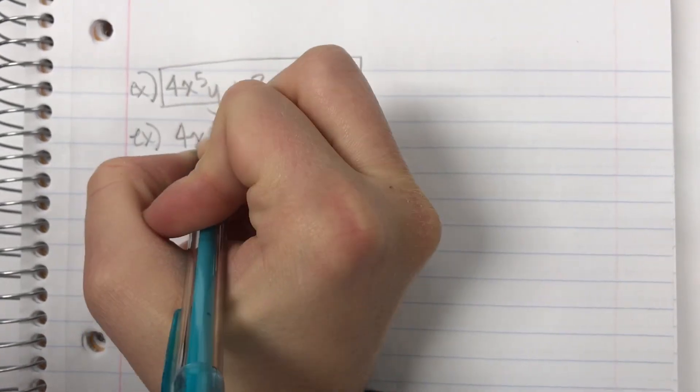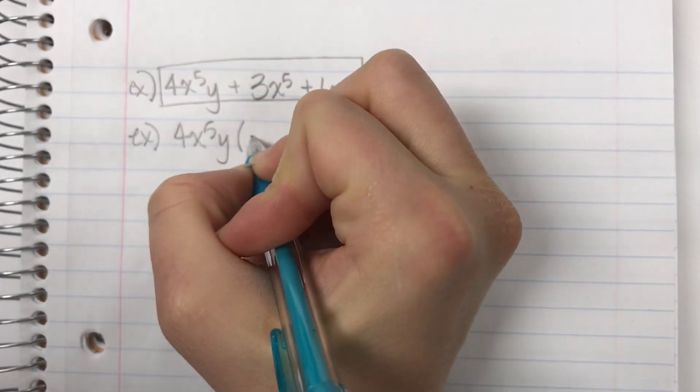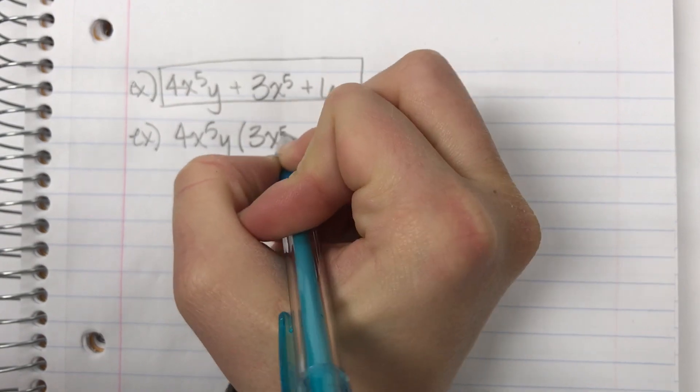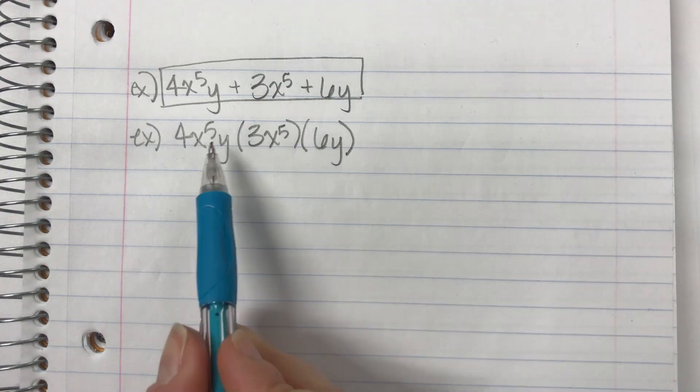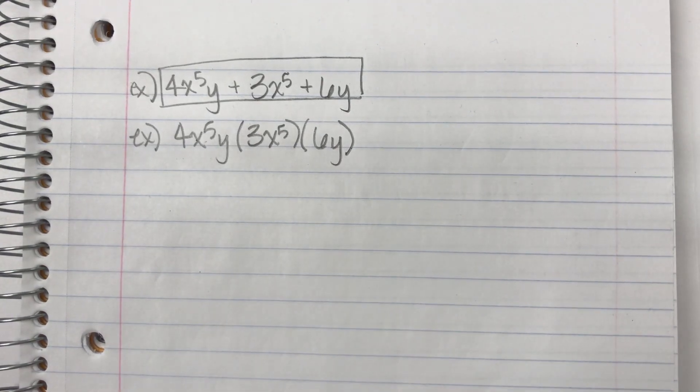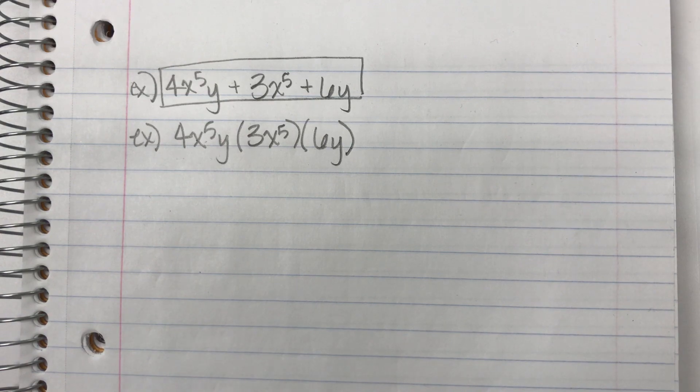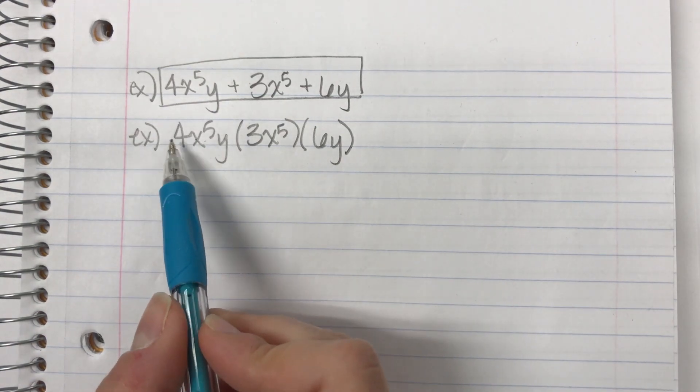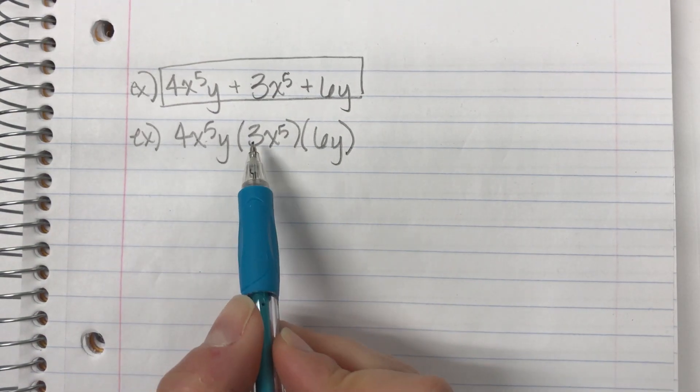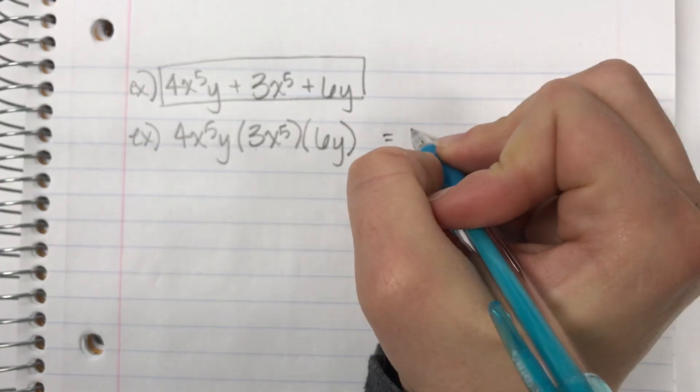All right, next one. 4x to the 5th y times 3x to the 5th times 6y. Here's an example of the problems we've been doing lately. Multiplication does not have to be the same labels and everything. They don't have to be like terms. I'm allowed to multiply. So I'm just going to multiply all the way across. I'm going to multiply coefficients. 4 times 3 is 12. 12 times 6 is 72.